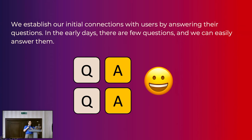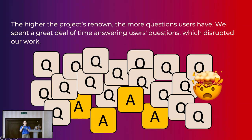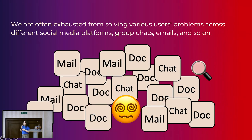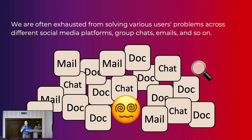In the early stage, when there are fewer questions, things are not that bad. We can easily address the questions and the user experience is okay. But the more popular the project grows, the more questions users may have. As the popularity of your open source project grows, you have to spend a great deal of time answering users' questions, which may continuously interrupt your daily work. If you often answer users' questions in the community, you will notice that many of them are very similar. We often get exhausted from solving various users' problems across different social media platforms, group chats, and emails. Even though many questions have been answered hundreds of times, because these answers are scattered everywhere and difficult to find, we end up answering them again and again.